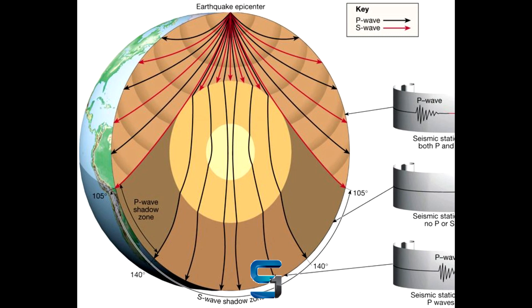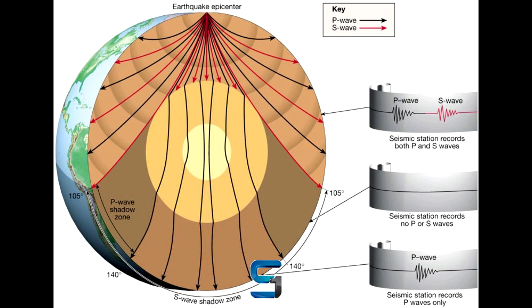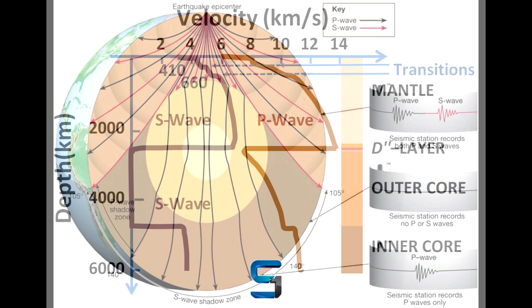Meanwhile, P waves also abruptly stopped at 104 degrees, but then started back up again at about 140 degrees, leaving a so-called shadow zone with no waves at all in between.